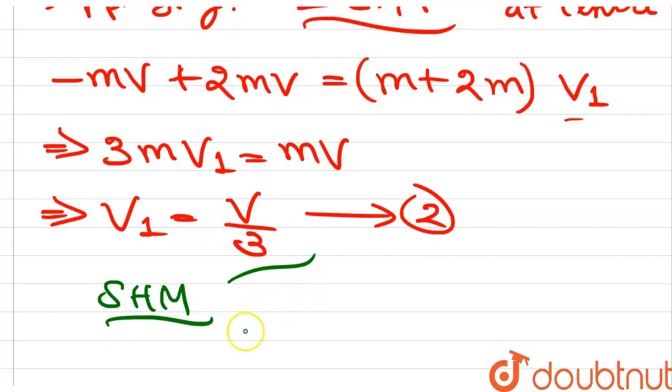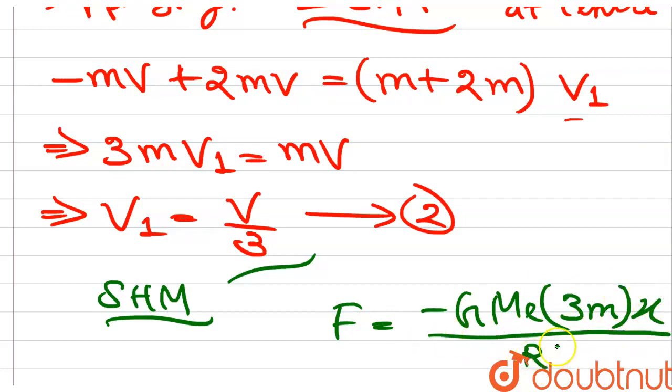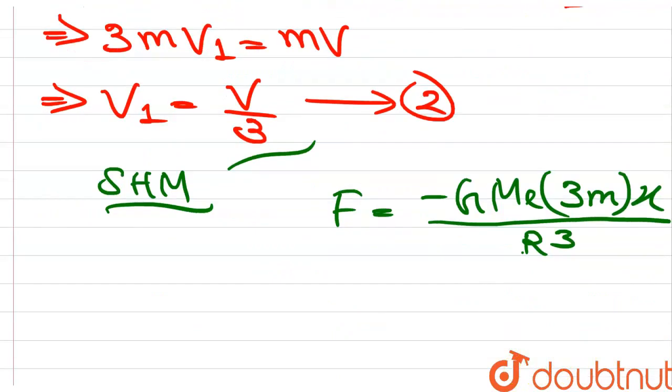So the force will be minus GMₑ into 3m mass into distance traveled by them divided by R cube. Let's put the value. F is equal to 3m times acceleration.